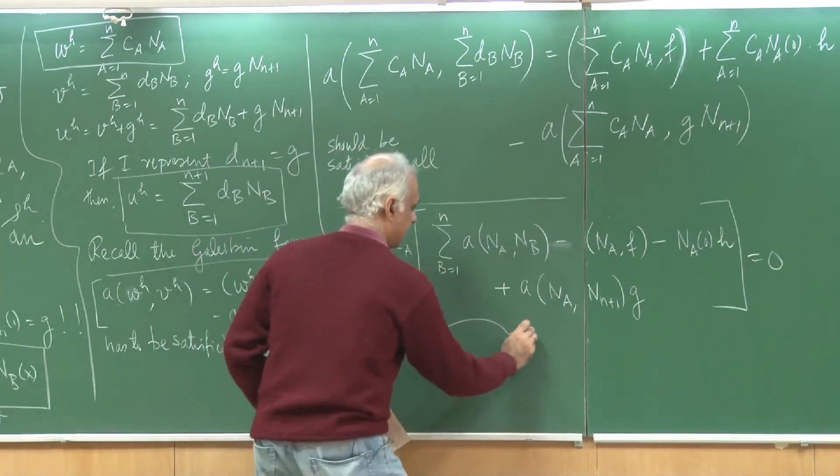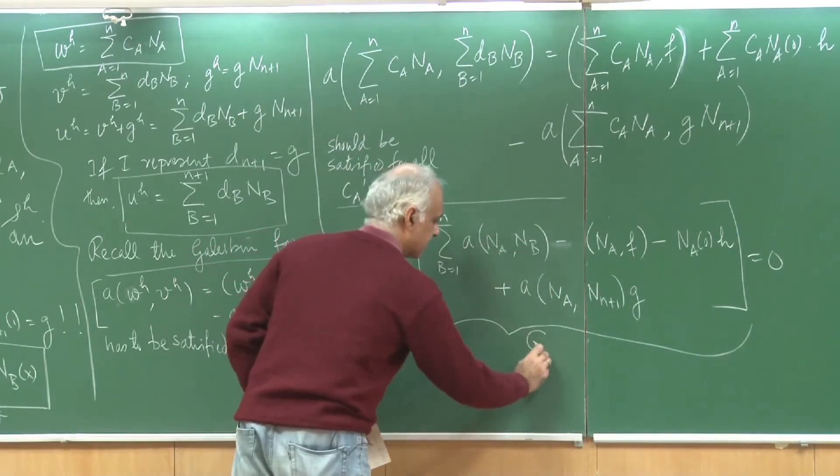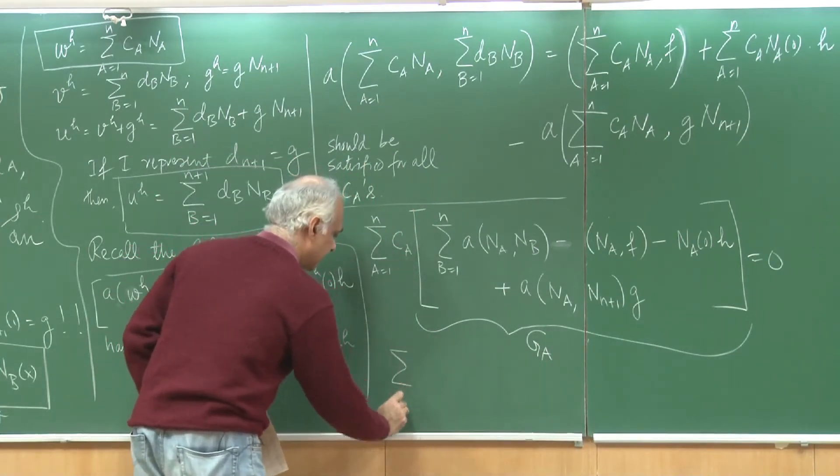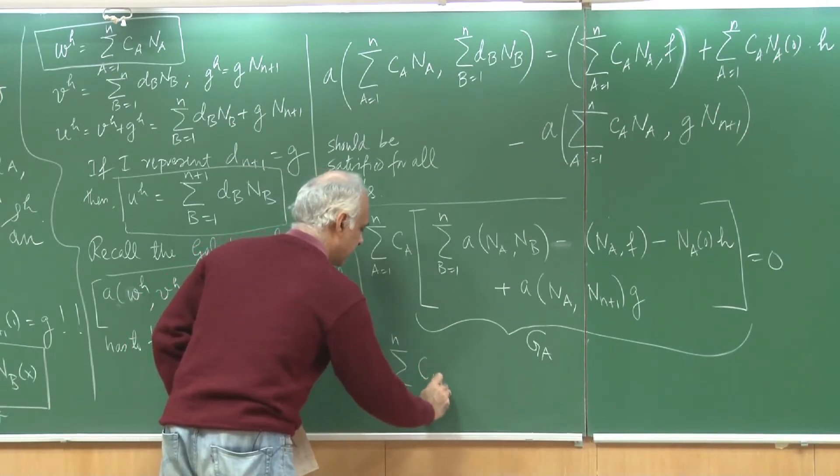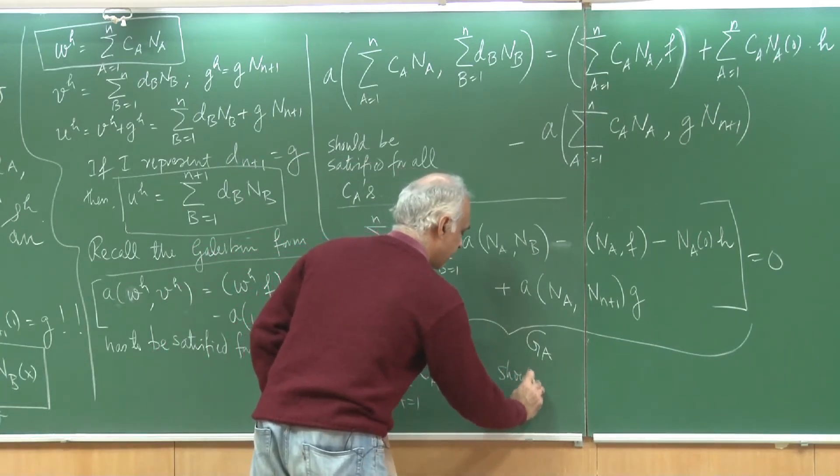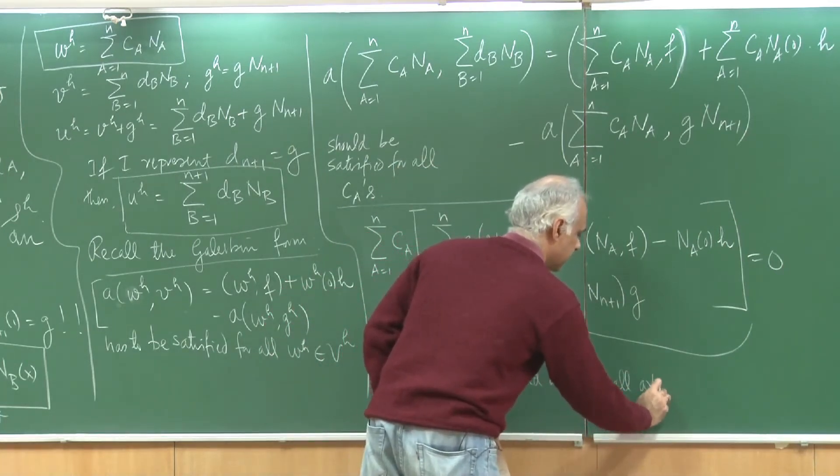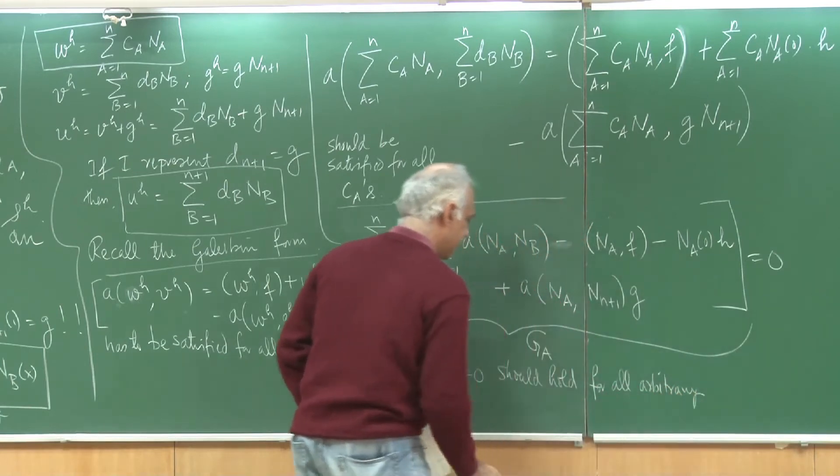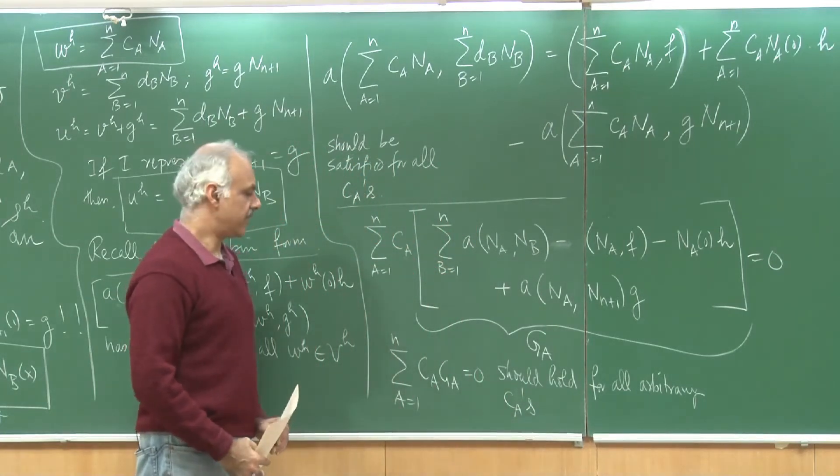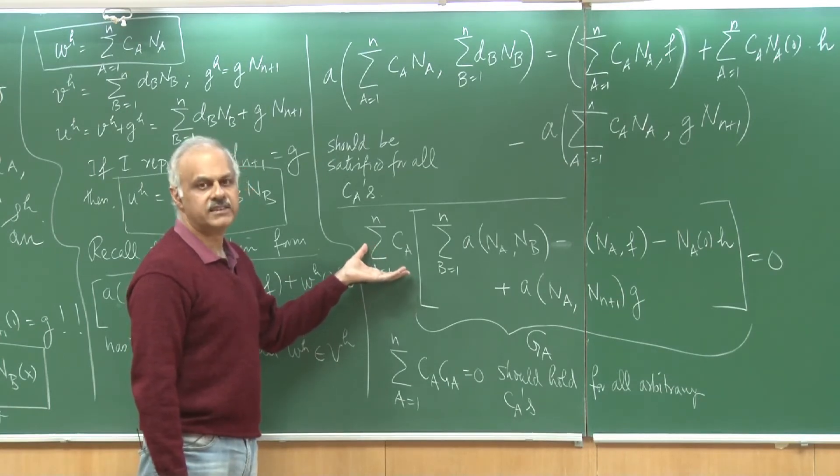I am going to call this quantity inside the square bracket as g_a. So I can write this statement as summation a goes from 1 to n c_a g_a is 0 and this should hold for all arbitrary combinations of c_a's because I have to satisfy this equation for all w_h that belong to v_h.